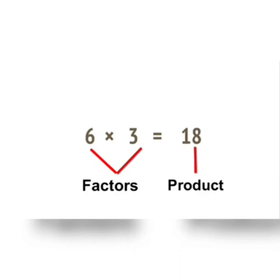Now let us understand factors and product. Factors are the numbers that we multiply. For example, in 6 into 3 is equal to 18, the numbers 6 and 3 are the factors, and 18 is the product. So the numbers we multiply are the factors, and the answer we get is the product.